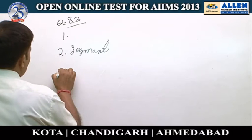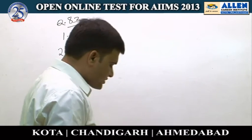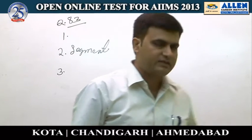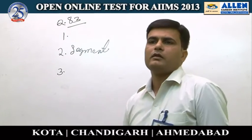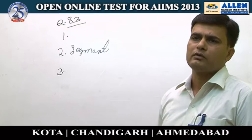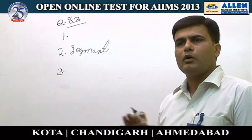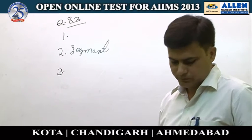Option three is organ system level of organization — this is also the wrong answer, because from phylum Echinodermata to Chordata, all have organ system level of organization.